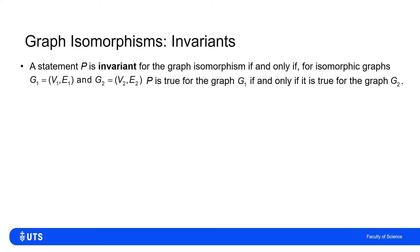Now, we say that the statement P is invariant for a graph isomorphism if and only if I have two isomorphic graphs, G1 and G2, where every time the statement P is true for G1, it's true for G2.